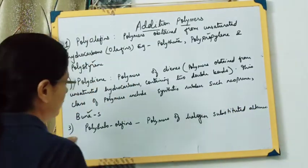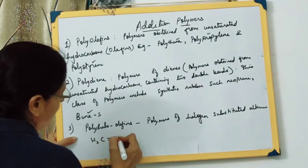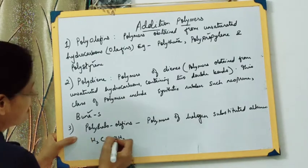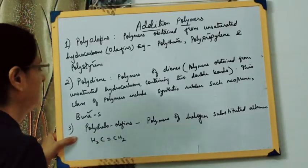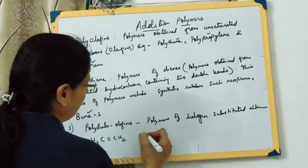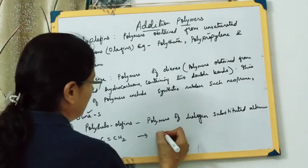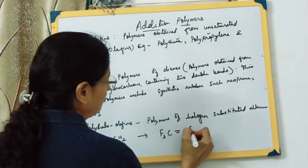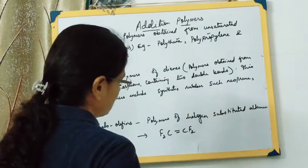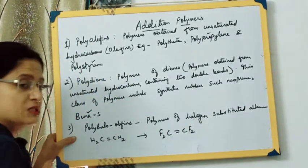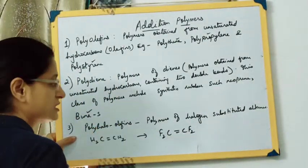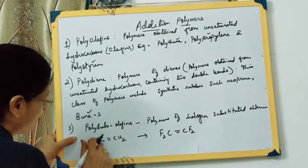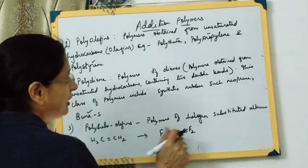For example, if we take ethylene and substitute hydrogen with fluorine, we get CF₂=CF₂. When this monomer polymerizes, the long chain obtained comes under polyhalo-olefins. So these are polymers of halogen-substituted alkenes, where hydrogen in the alkene is replaced by a halogen.